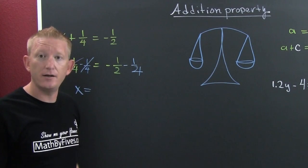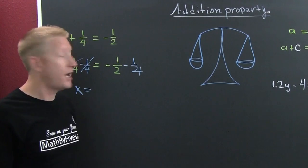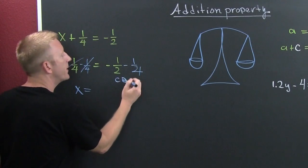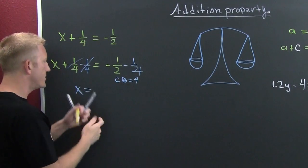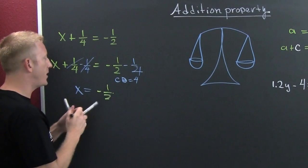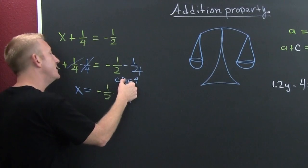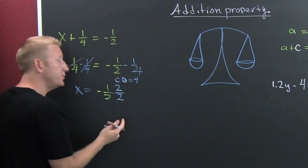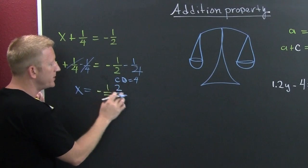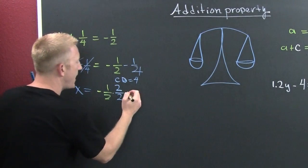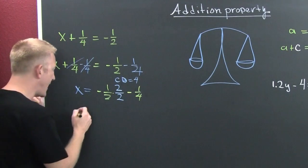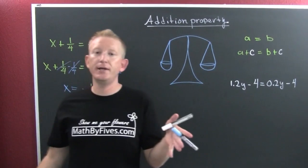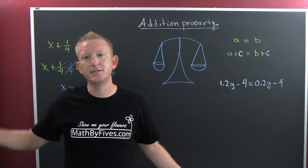On the right side, can you add those fractions the way they are? No. We need a common denominator. The common denominator is going to be four. So I take that minus one-half and multiply it by a magic one — two over two — to get two over four. Then I still have that minus one-fourth. I need the common denominator in order to add those numerators.